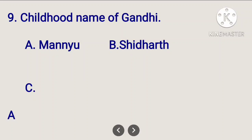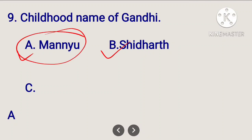What is the childhood name of Gandhi? The options include Manu and Siddharth. The correct answer is Manu. The childhood name of Gandhi is Manu.